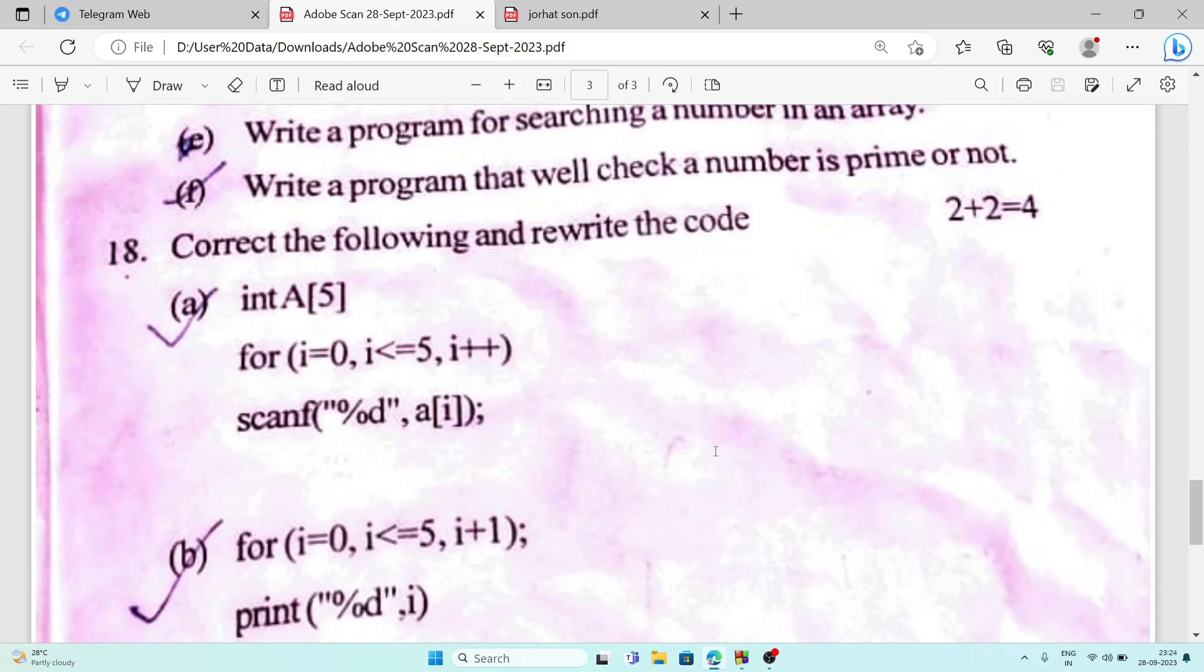Number 18, correct the following and rewrite the code. Here int a[5], for i=0, i<=5, i++, scan a[i]. The mistake is the less than equal symbol is not required because the size of the array is 5. So it should be i=0, i<5. The equal symbol is not required. In scanf after %d, comma, then before a[i] an ampersand symbol is required.